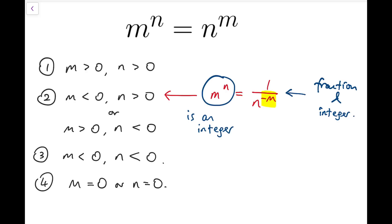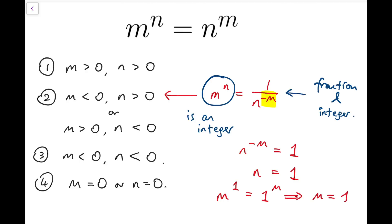From this we can deduce that n to the power minus m must be one. It could be minus one as well, but since the base n is positive, n to the power minus m must be positive, so it can't be minus one — it has to be one. From this, we can say that n must be one. Now when n is one, putting that back into the equation gives us n to the power one equals one to the power m, and from this we can only tell that m equals one, but that's a contradiction because m is negative. So there is no solution for the second case.